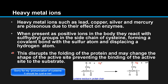This disrupts the folding of the protein and may change the shape of the active site, preventing the binding of the substrate. Here we have the sulfhydryl group in the cysteine side chain, and a positive silver ion forms a covalent bond with the sulfur atom. This hydrogen atom is displaced, giving a positive hydrogen ion.